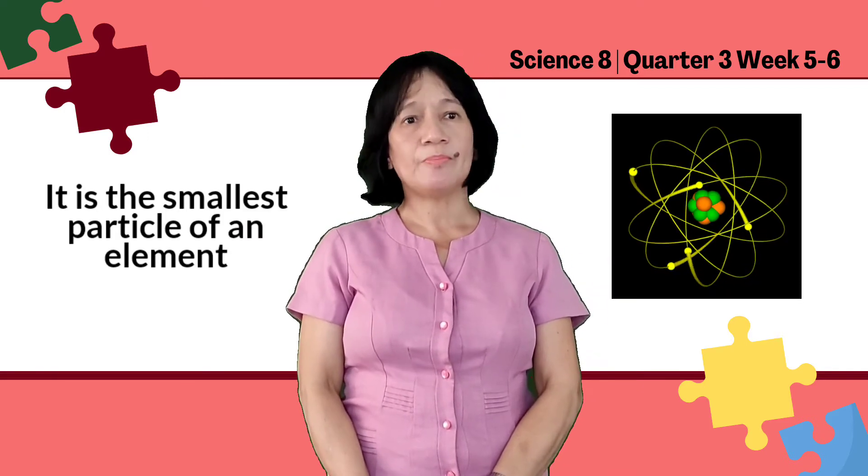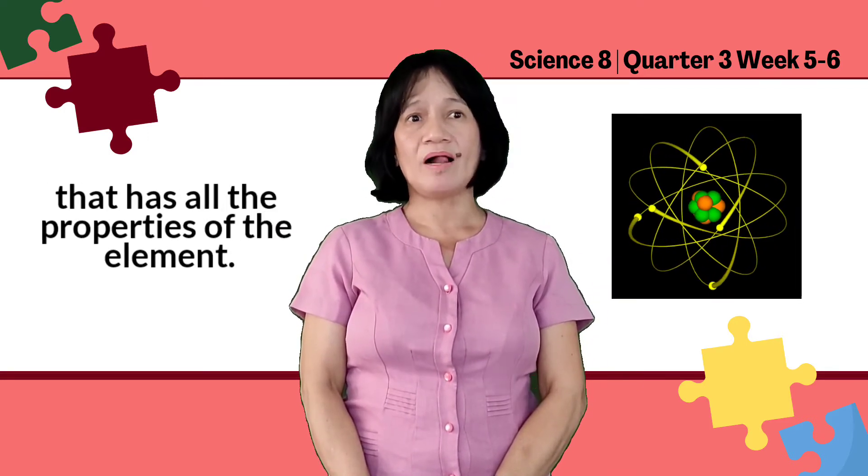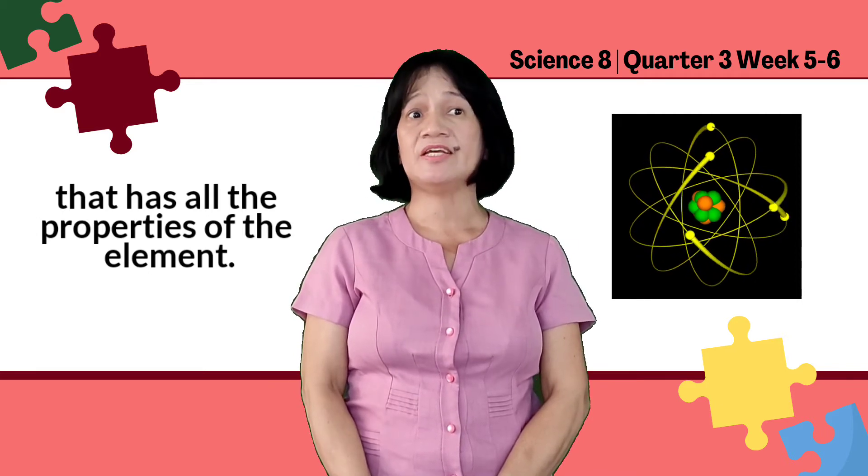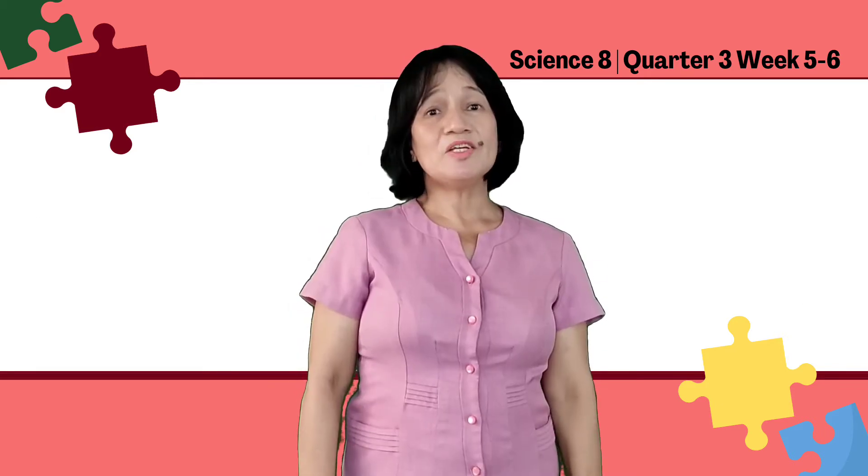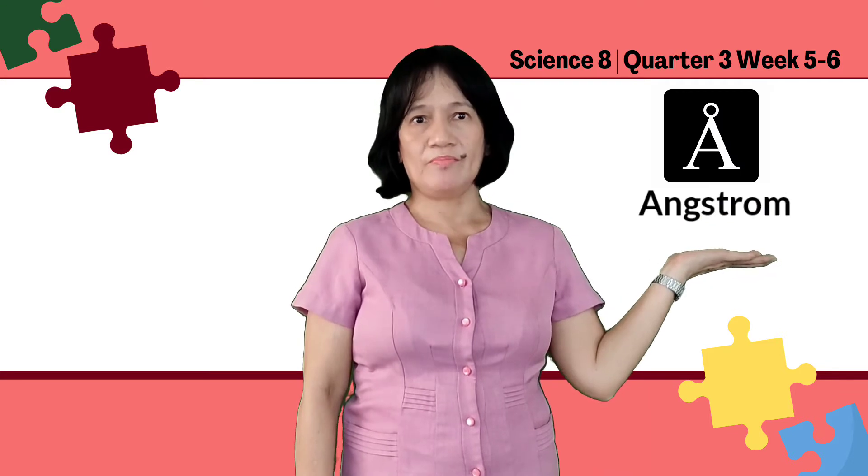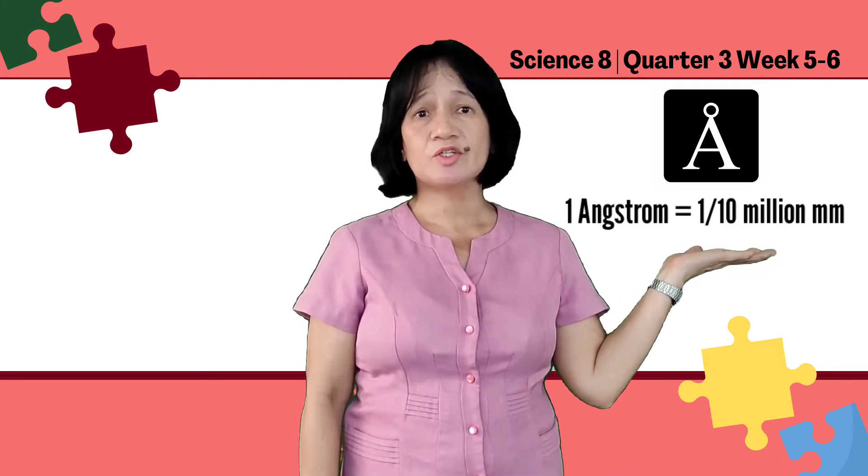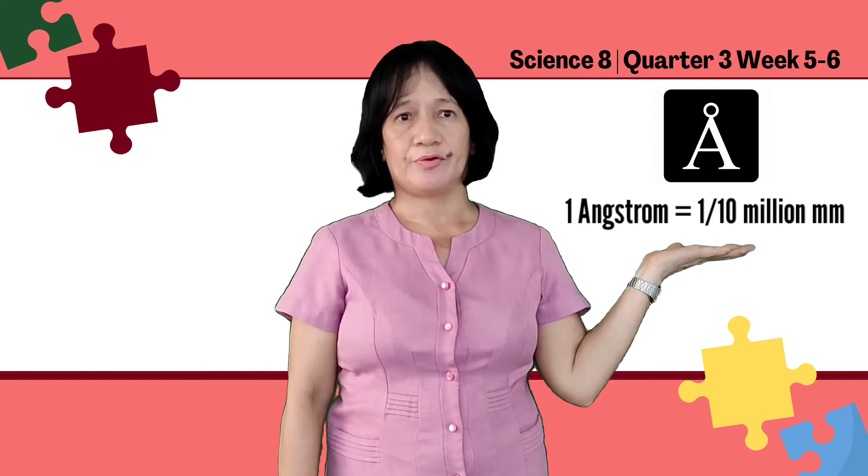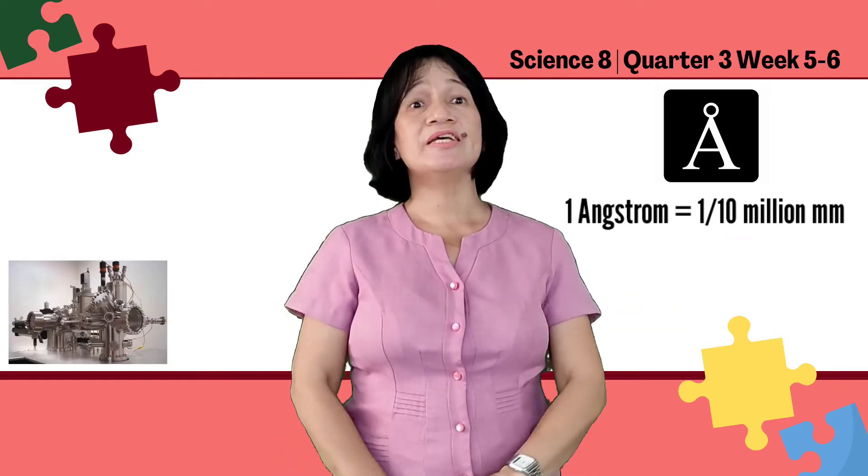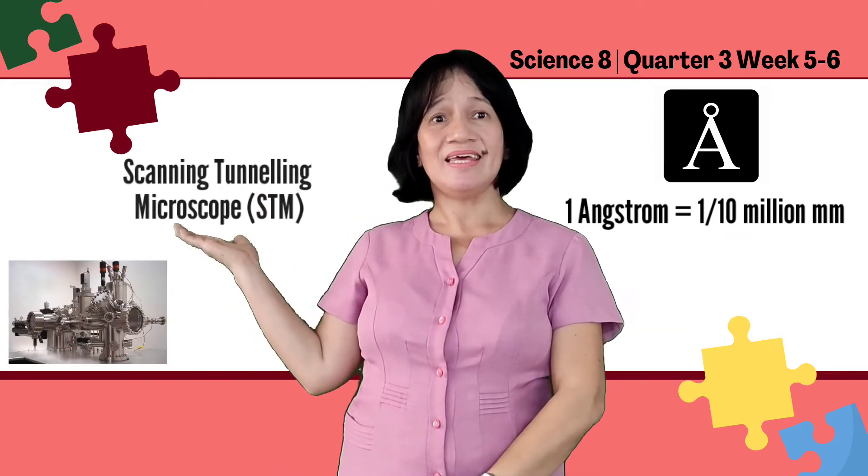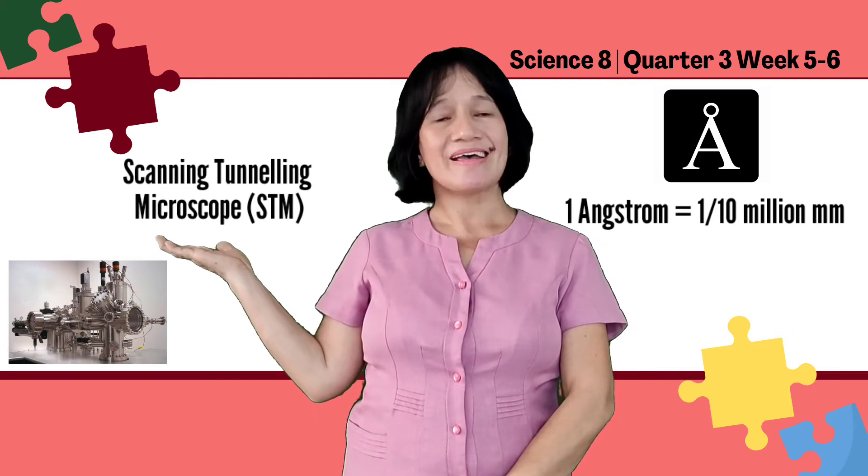It is the smallest particle of an element that has all the properties of the element. Atom is measured in angstrom, where one angstrom equals one ten-millionth of a millimeter. It can be viewed using a scanning tunneling microscope, or STM.